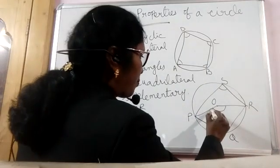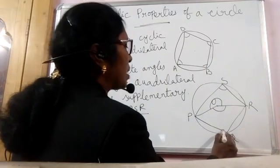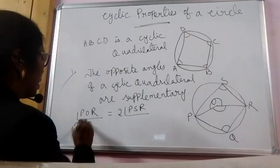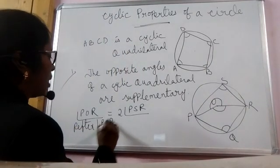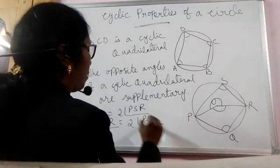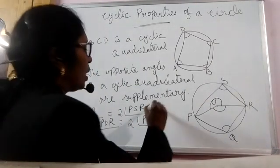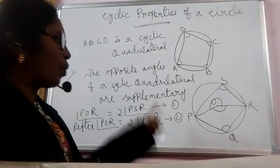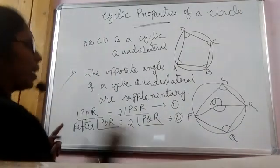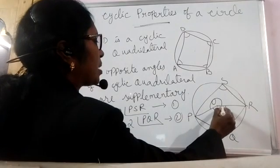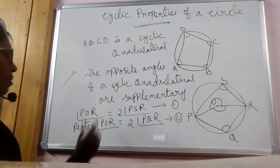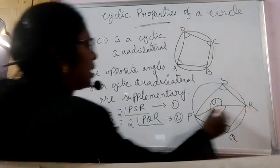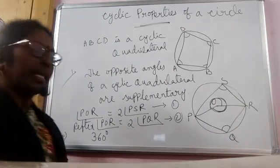Same way, reflex angle P, O, R is twice of angle P, Q, R. So reflex angle P, O, R equals twice of angle P, Q, R — let this be equation 1, and the previous one equation 2. When we add these two equations we get angle P, O, R plus reflex angle P, O, R, which when added gives 360 degrees.